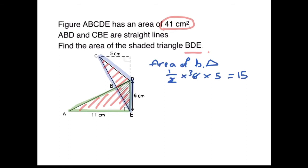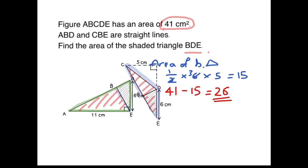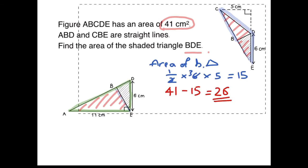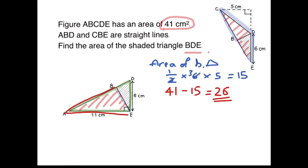Then my next step, by subtracting 15 from 41, I get 26. But what does this 26 represent? So imagine the whole diagram is 41, and I'm taking away the area of the blue triangle — cutting away this blue triangle here, which is 15. And what am I left with? I am left with the portion that's in red. I am only left with this portion, and this portion is 26 square centimeters.